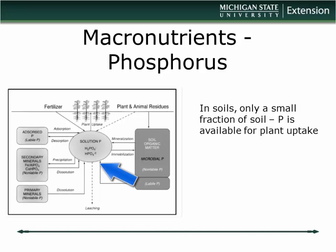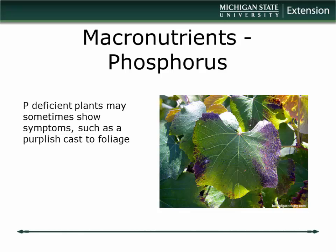Plants take up phosphorus from the soil solution through their roots, and that available fraction is actually fairly small. It's affected by the overall phosphorus present as well as soil pH. The key point is: just because there's a lot of phosphorus there doesn't necessarily mean it's available. In container production it's a bit different because we're supplying phosphorus from fertilizer directly into solution, so phosphorus problems are more of an issue in field situations due to low availability.